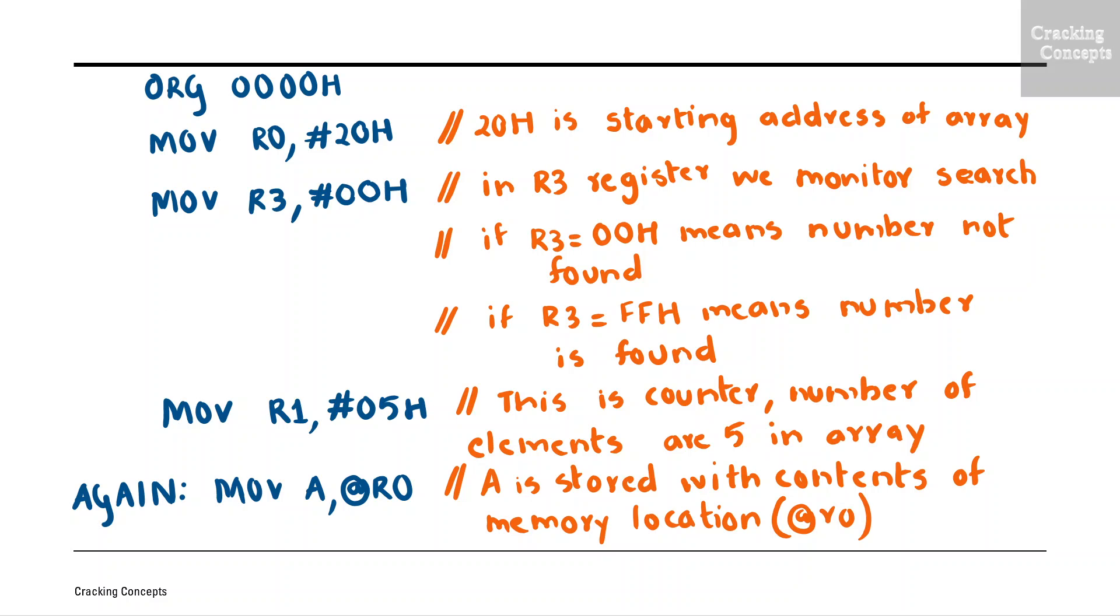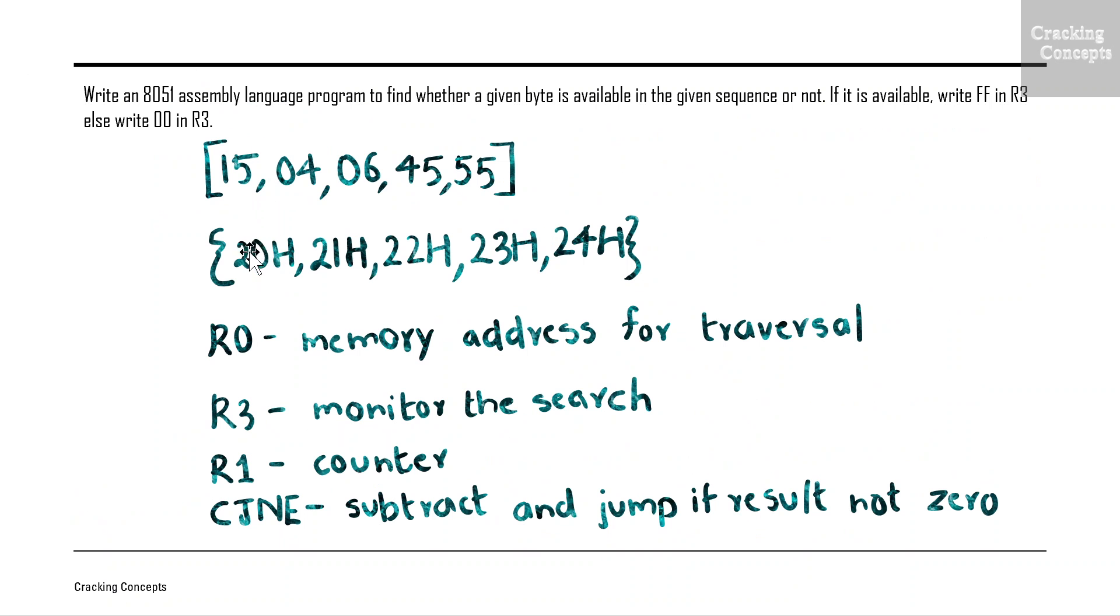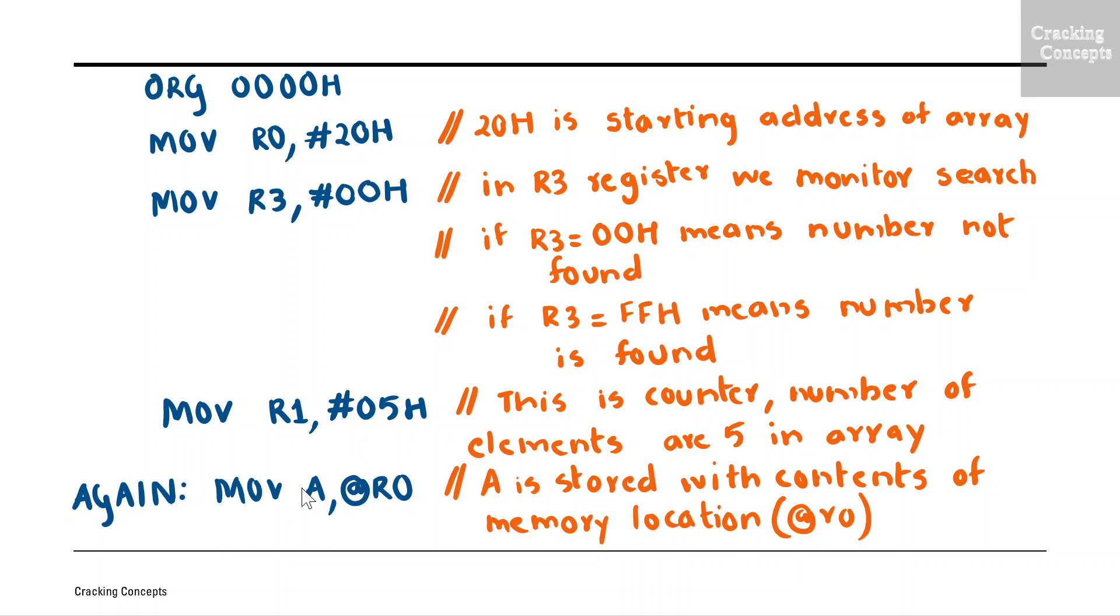The next few statements will take each byte from the sequence and compare it with the value that should be searched for. Before starting the next statement, we will give a label AGAIN, so that when the repetition has to happen, the control will be transferred to this label. The next statement is to take the value from register R0 and copy it to A. Now R0 points to 20H. To get the value at that particular address, we will use at the rate R0. So at the rate R0 will give the value 15, which will be copied to the accumulator.